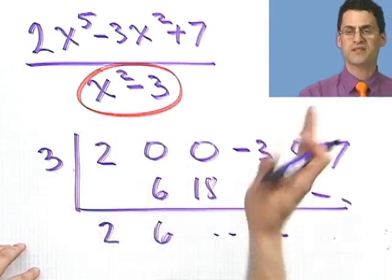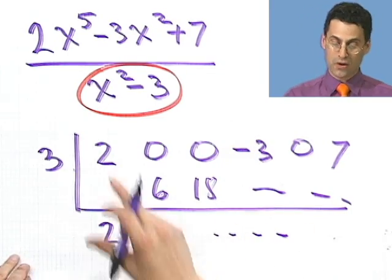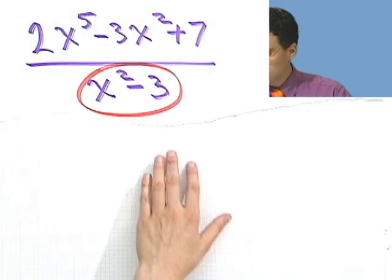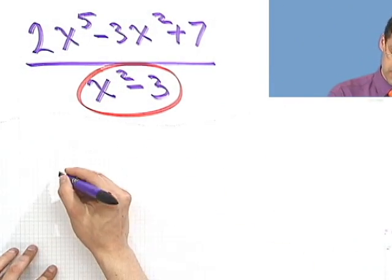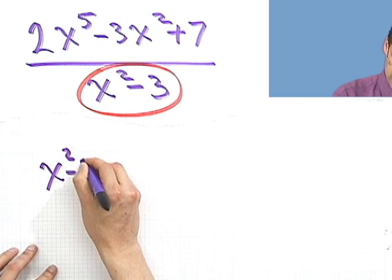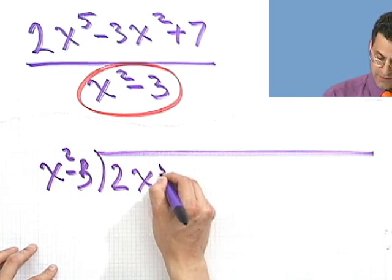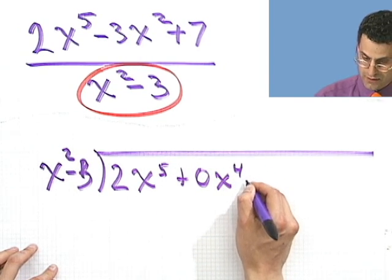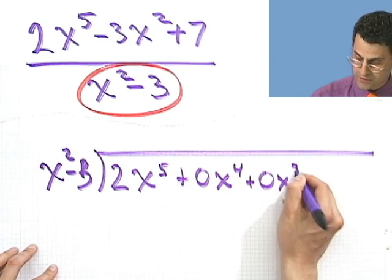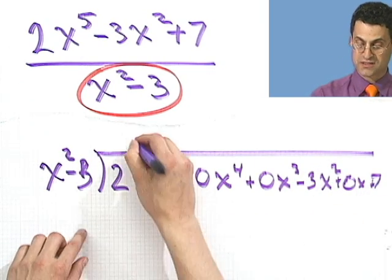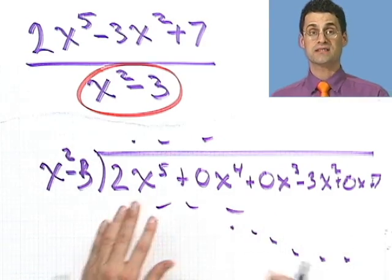Synthetic division is not going to work there. Even though you may think 'oh, synthetic division' — no. The only way to do this problem is to actually do the long division: take x squared minus 3 and long divide into 2x⁵ + 0x⁴ + 0x³ − 3x² + 0x + 7. Synthetic division only works for x plus a number or x minus a number.